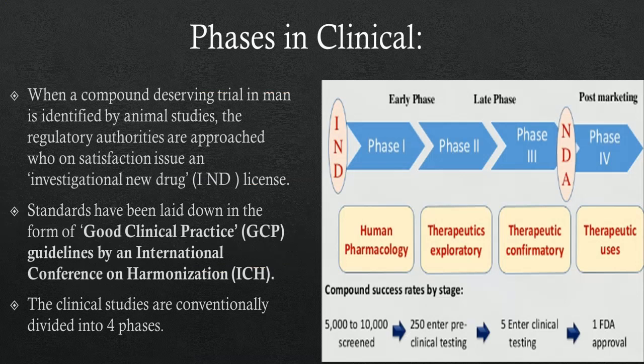Phases in Clinical Trials: When a compound deserving trial in man is identified by animal studies, the regulatory authorities are approached, who on satisfaction issue an Investigational New Drug, IND, license.